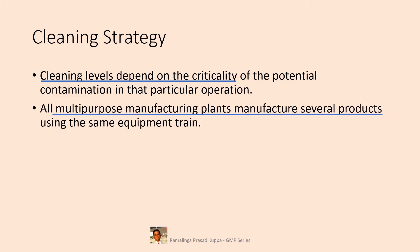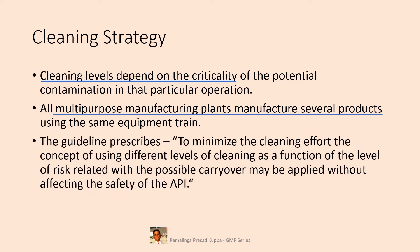All multi-purpose manufacturing plants manufacture several products using the same equipment train. By definition, multi-purpose means it is for many different products. So changeover cleaning from one product to another is a must to avoid contamination of the previous product in the next product. More the number of products, more the number of changeover cleanings. There could be several permutations and combinations for turning around several products, and it may appear that the cleaning activity is more than the manufacturing activity. The guideline prescribes that to minimize the cleaning effort, the concept of using different levels of cleaning as a function of the level of risk related to possible carryover may be applied without affecting the safety of the API.